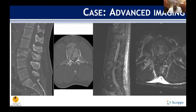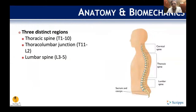On his MRI, the sagittal view shows signal change in the posterior ligamentous complex. On the axial you can see how compressed his cord is. That's our initial case.